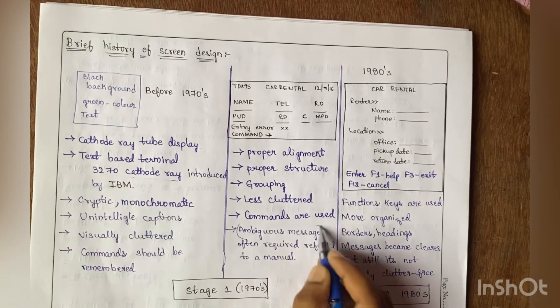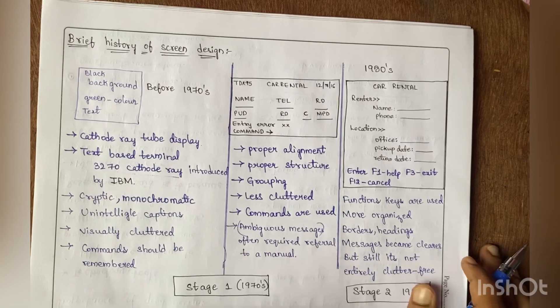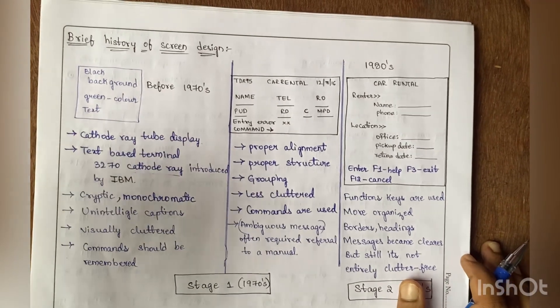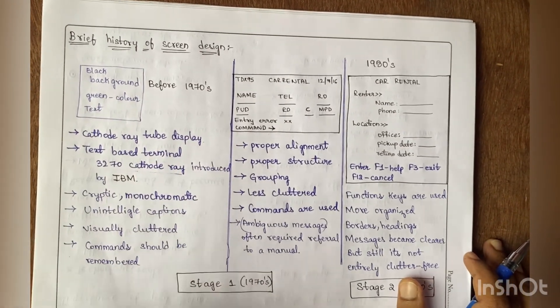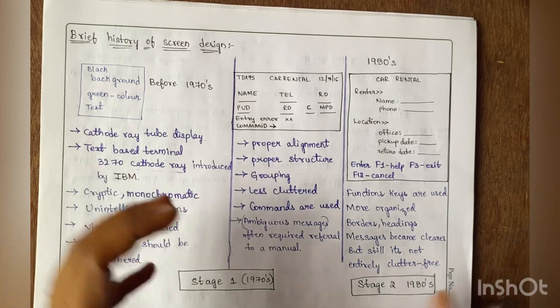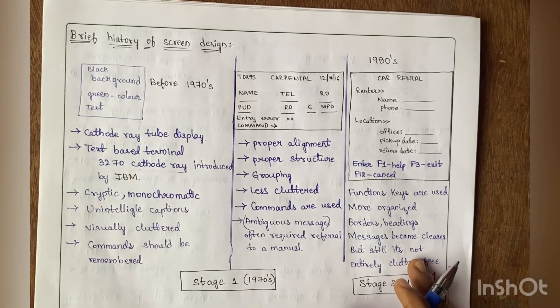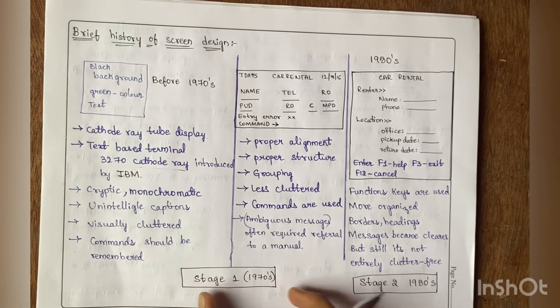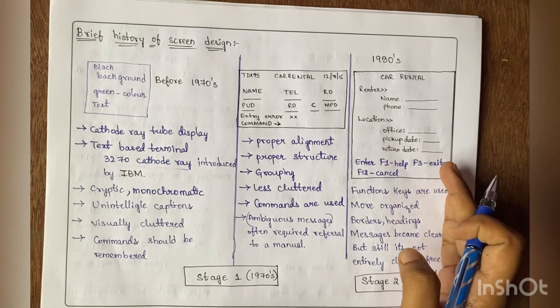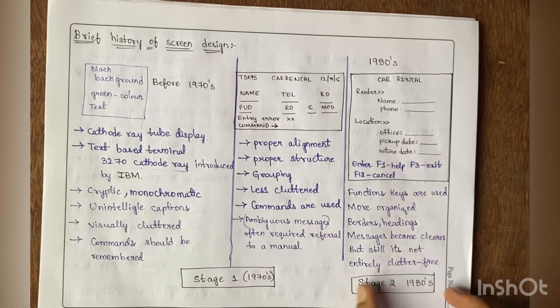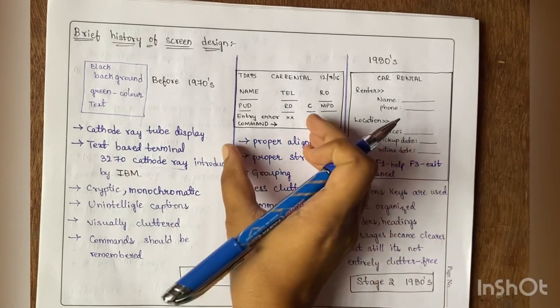They had ambiguous messages, and users often had to refer to manuals for everything. Whatever they needed to type or input required commands, so they had to always remember these commands. This is Stage 1 during 1970s. Coming to 1980s, which is Stage 2, this design